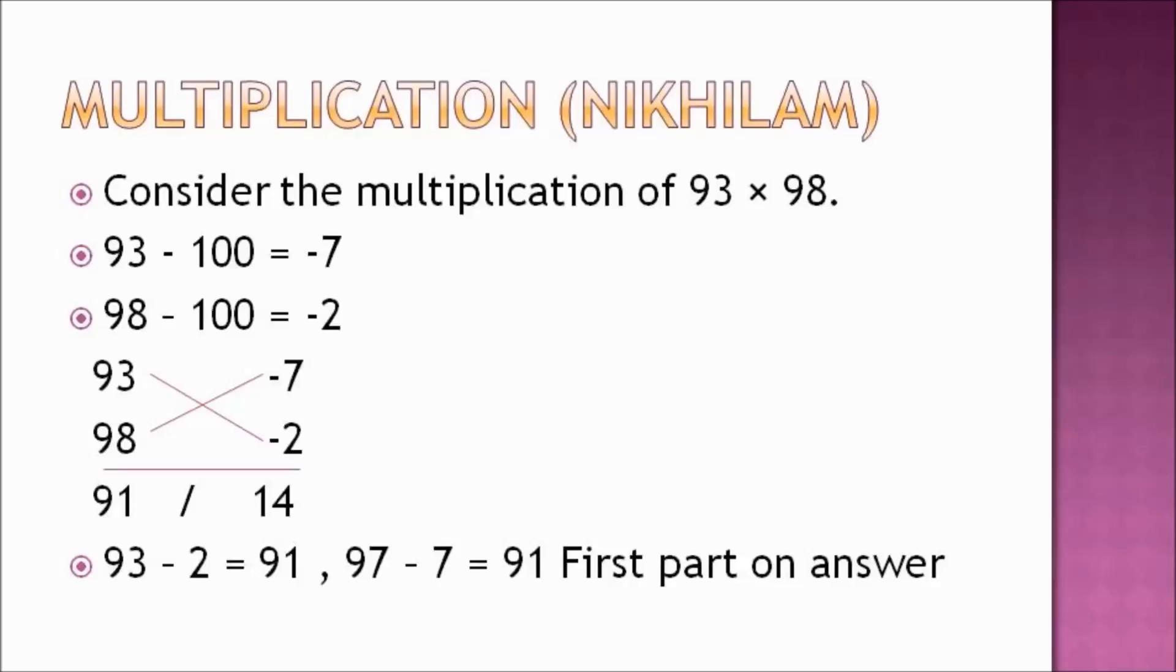This is interpreted as 9,100, as the base is 100. Now, just multiply the two differences, -2 × -7, to get 14, which is the second part of the answer. The final answer is 9,114, which can also be interpreted as 9,100 + 14.